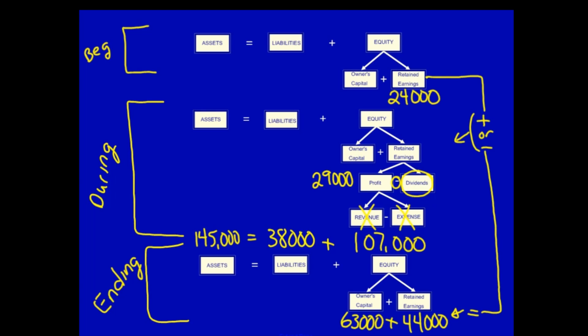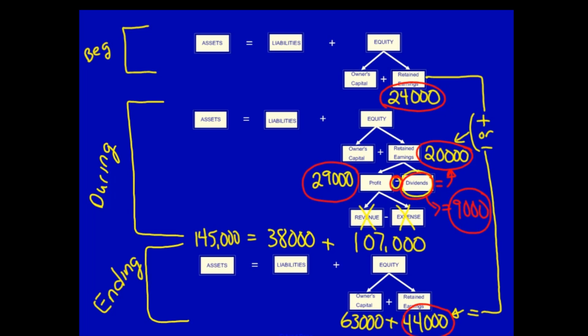Opening retained earnings plus or minus the during equals the ending. So $24,000 plus X equals $44,000, meaning the change in retained earnings during the year must be $20,000. Can we now solve for dividends? Profit minus dividends equals retained earnings. That means $29,000 minus some number for dividends equals $20,000. Therefore dividends are equal to $9,000 — the answer we were looking for.